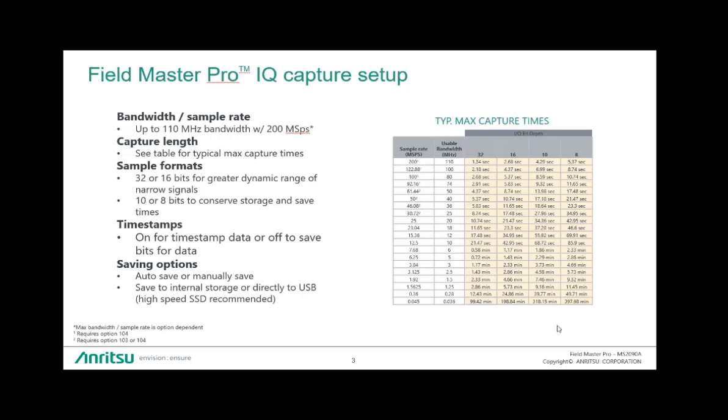And then as you scale down in bandwidth, you can get up to hours worth of capture. So that's variable for the user. We do offer flexibility in sample format, in the bit resolution. The reason for that is when you're looking at more narrow captures, you can get more resolution. With a higher bit depth, you can get more resolution in the noise floor. As you go wider in capture, the noise floor of the instrument rises up, and that bit depth maybe doesn't do you as much good. So you can save data by going to a smaller 8 or 10-bit resolution. We offer timestamps on all the data and different saving options.